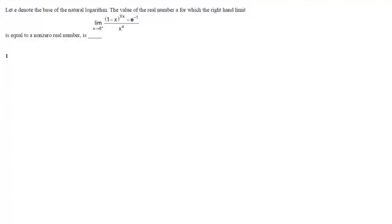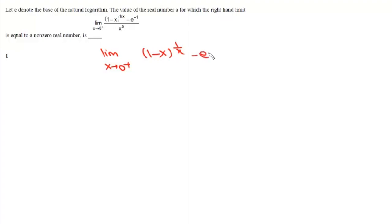The question is: if e denotes the base of the natural logarithm, then find the value of real number a for which the right-hand limit, as x tends to 0 positive, of (1 minus x)^(1/x) minus e^(-1), divided by x^a, is equal to a non-zero real number.